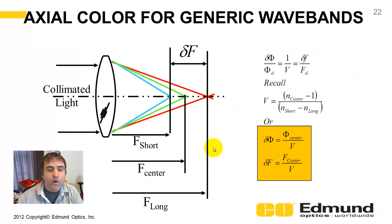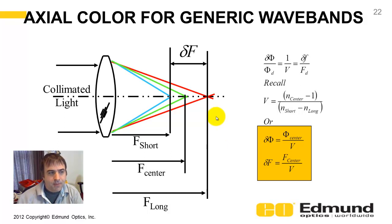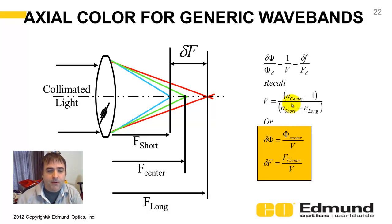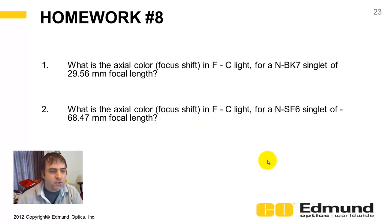What if you have a non-visible waveband — say UV out to the infrared? You want to change your definitions. The V number becomes: the center wavelength index minus 1, divided by the change from short to long wavelength index. These same equations still hold — delta power or delta focal length equals the power or focal length at the center wavelength divided by the V number. Note that converting from power to focal length, there is a negative sign, as shown by Newton's thin lens equation.